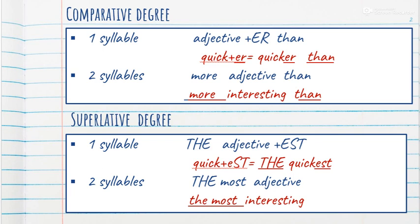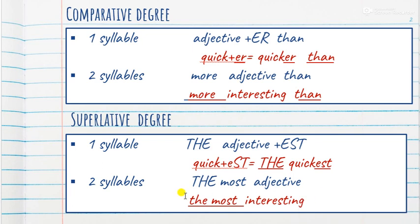Superlative degree: for one-syllable adjectives, use 'the' plus adjective plus -est. For two-syllable adjectives, use 'the most' plus adjective. For example, 'the most interesting'.